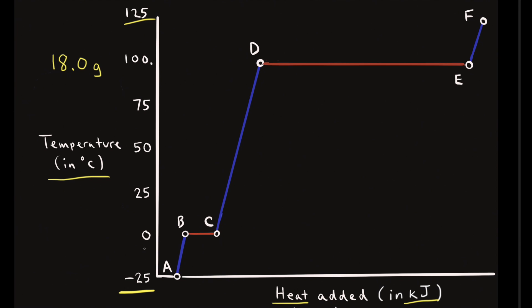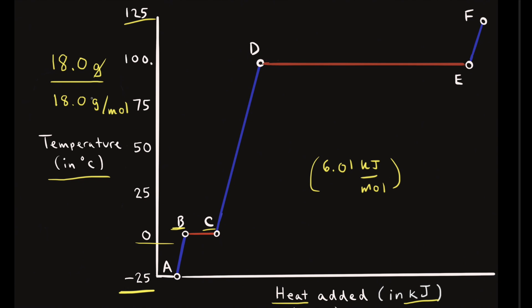Now that the ice is at zero degrees Celsius, it's going to melt. We're going from point B to point C on the heating curve. To calculate how much heat is necessary to melt the ice, we need the heat of fusion of ice, which is 6.01 kilojoules per mole. Starting with 18.0 grams divided by the molar mass of H₂O (18.0 g/mol) gives us 1.00 mole. Multiplying 1.00 mol × 6.01 kJ/mol gives us 6.01 kilojoules.